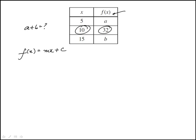We know when x is 10, the value of the function is 32. So 32 = m times 10 plus c. We can isolate c.